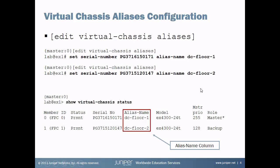Once I have committed these changes, when I run the Show Virtual Chassis Status command, a new column called 'alias name' appears in the output showing the alias names configured and assigned to these serial numbers. Now I'd like to connect to the console of these switches combined into a Virtual Chassis and show you a bit more.